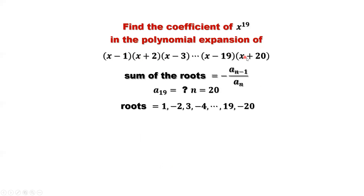What are the solutions, the roots for this polynomial? If we set the first factor equal to zero, we find x equals 1. Then x plus 2 equals zero gives x equals negative 2. x minus 3 equals zero gives x equals 3. Then negative 4, positive 5, negative 6, and so on until 19 and negative 20. Those are all the roots for this polynomial.